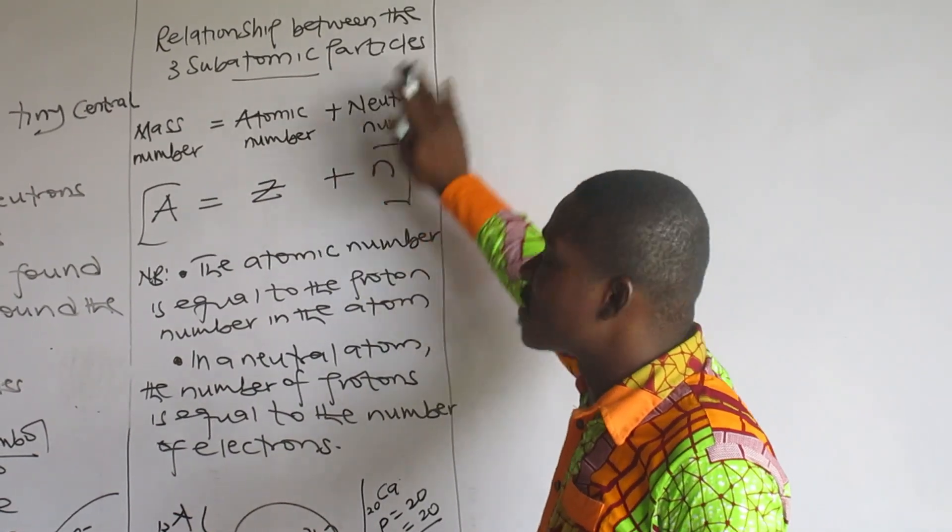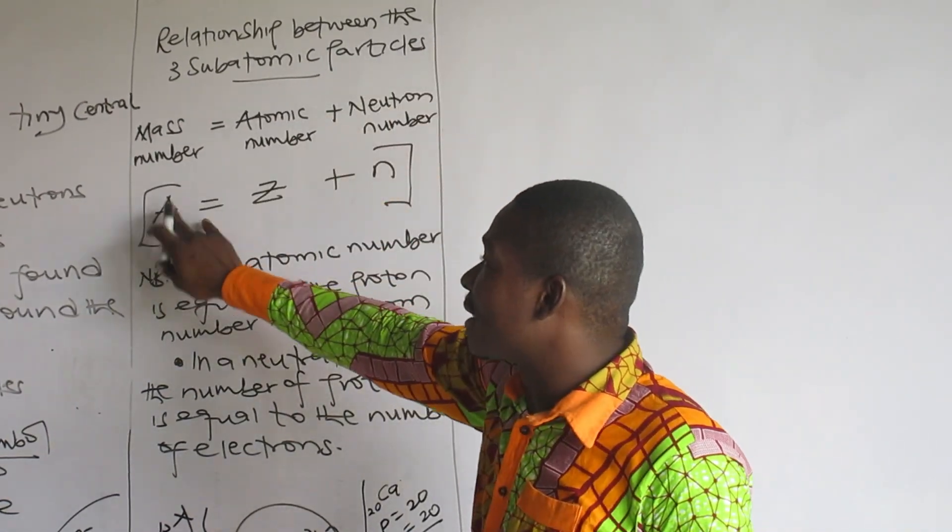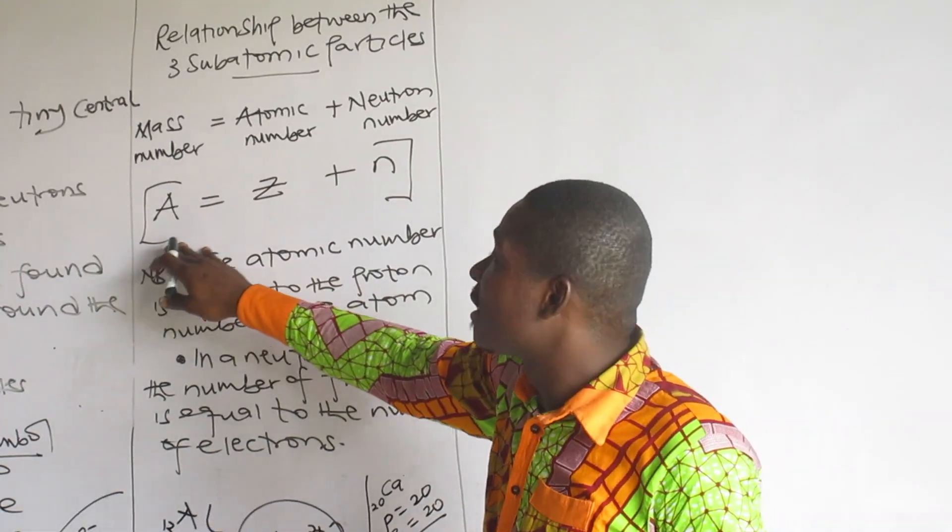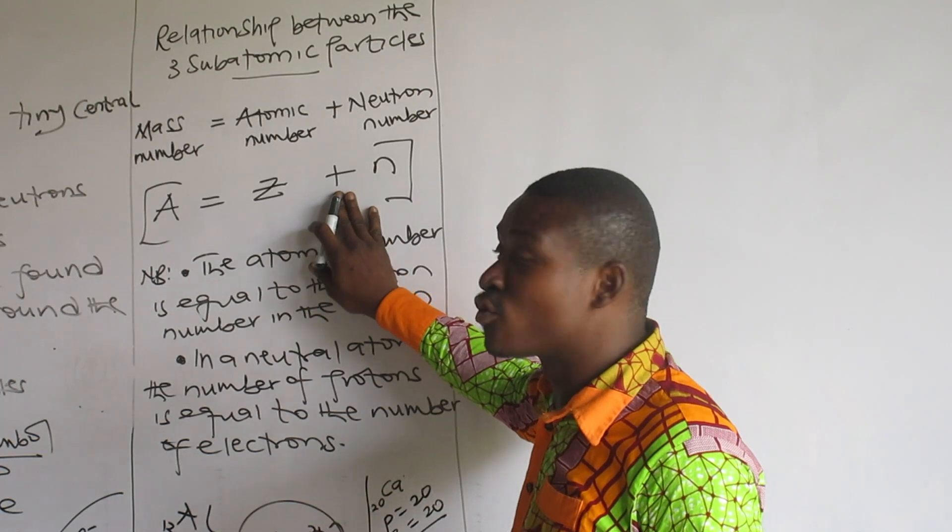Next question, we are going to use this parameter, the mass number, that is A. This is Z, that is the atomic number. The number of neutrons.